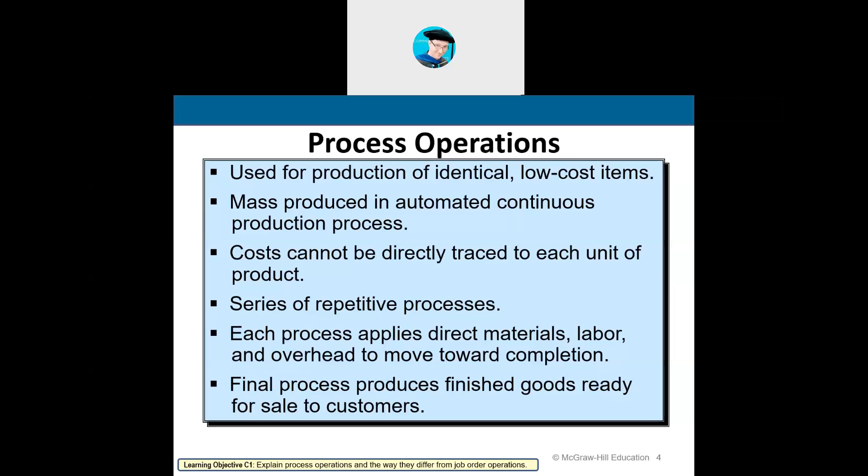So if you think of a continuous process — continuous manufacturing regardless of customer orders — that is what we call process manufacturing. It's a series of steps. The cost cannot be directly traced to each individual product, but they can be traced to the process. I'll explain that in the next few slides.